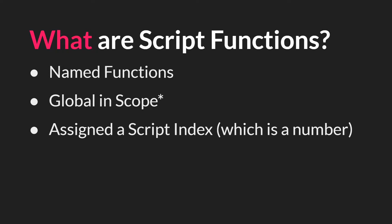The next important thing to know about script functions is that they're assigned a script index, and that index is a number. So if you were to check the type of a script function, GameMaker would tell you that it's a number.